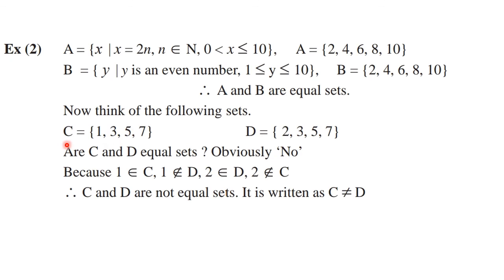Consider another example: set C = {1, 3, 5, 7} and set D = {2, 3, 5, 7}. Comparing both sets, the number 1 present in set C is missing from set D, and the number 2 present in set D is missing from set C. Therefore, we cannot say that set C and set D are equal. We write it using the not-equal sign: set C ≠ set D.